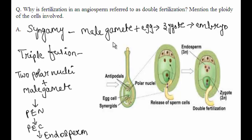In syngamy, the male gamete fuses with the female gamete — that is, the egg — and forms a zygote, which further develops into the embryo. Syngamy is also called generative fertilization.